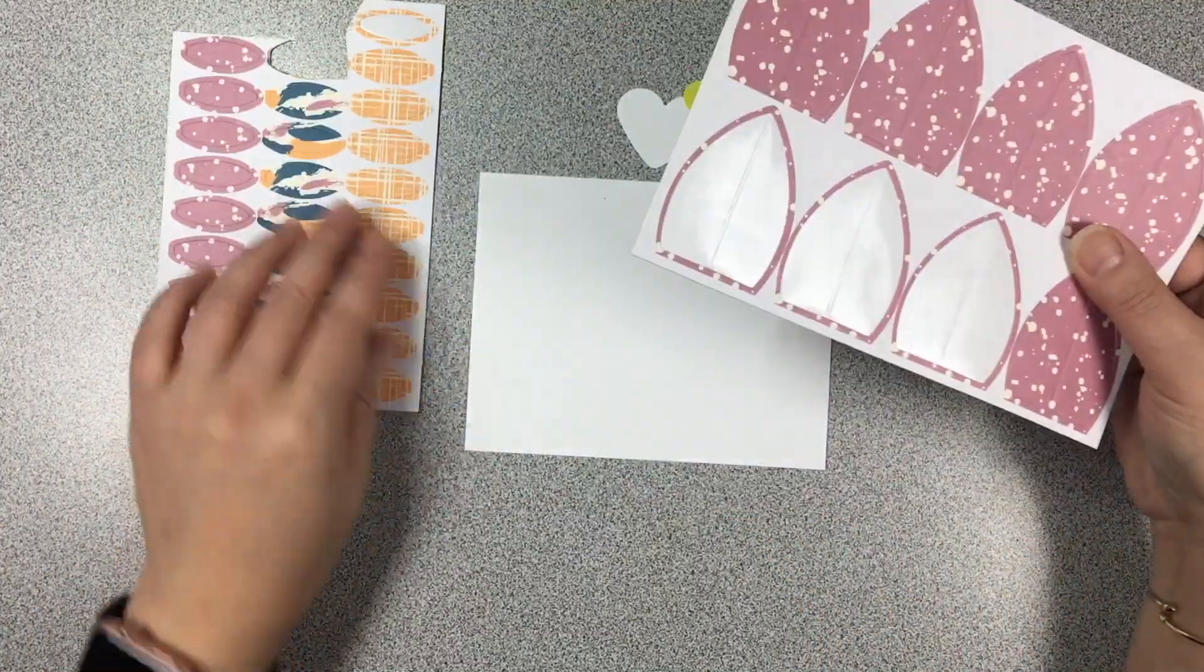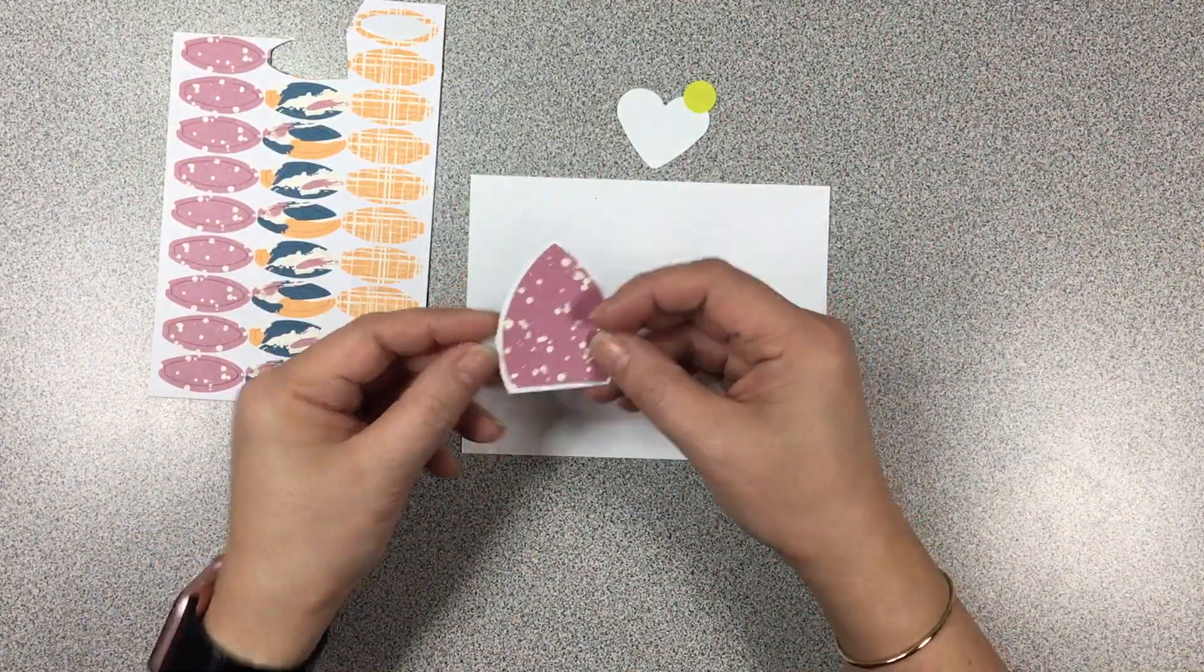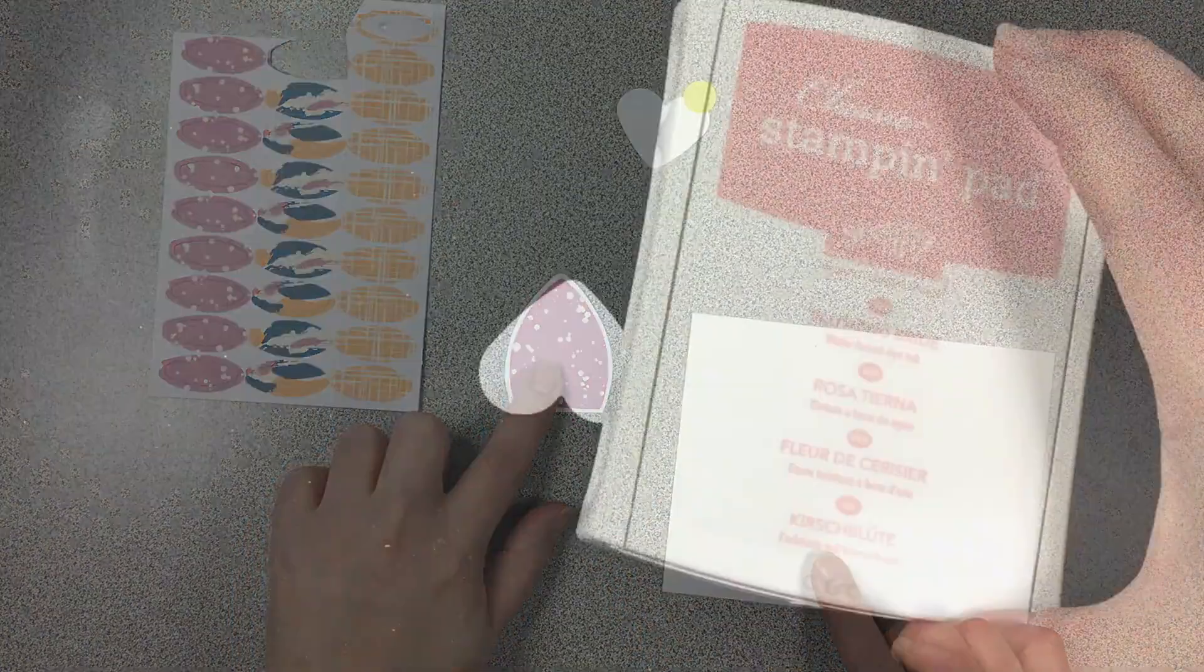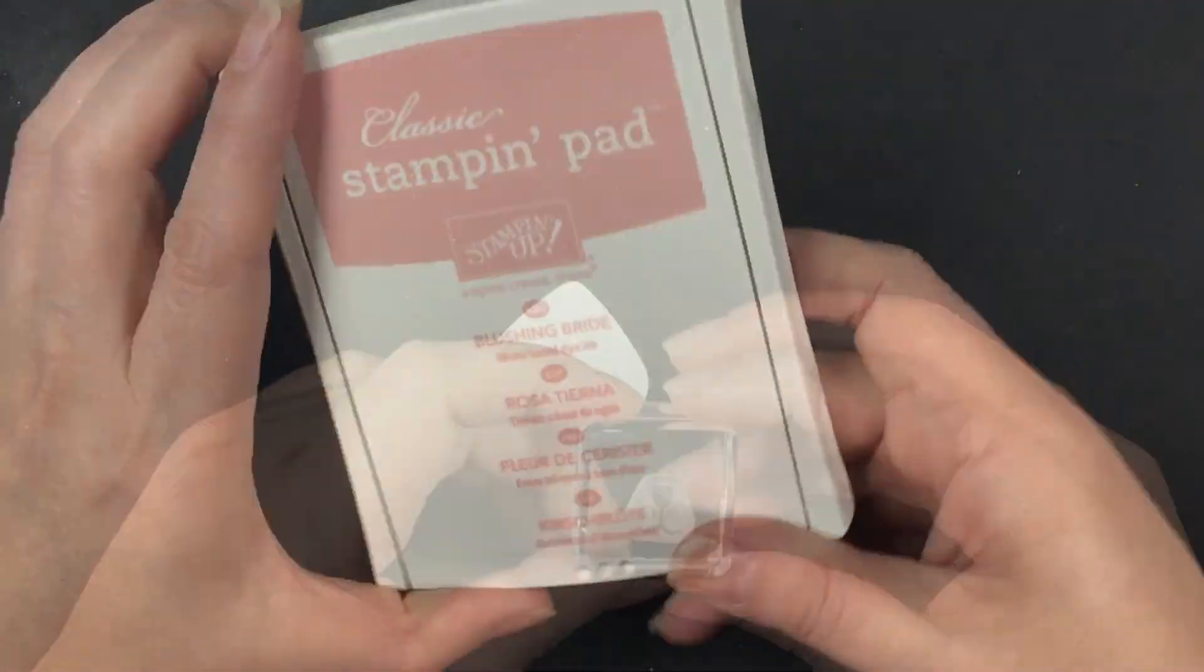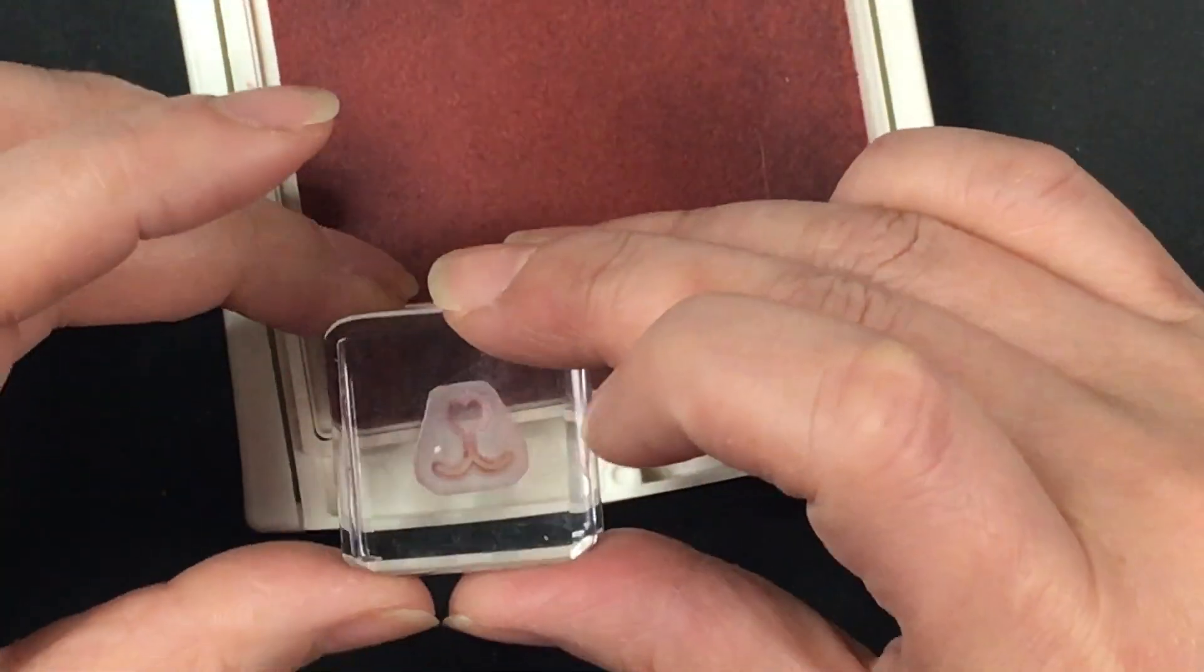With that large bunny ear I basically just peeled it off and put it on to a piece of cardstock and then just cut around it leaving a white border.